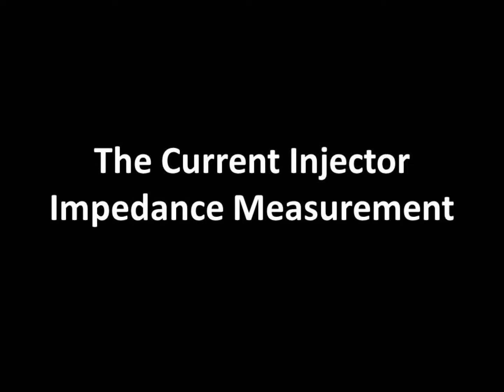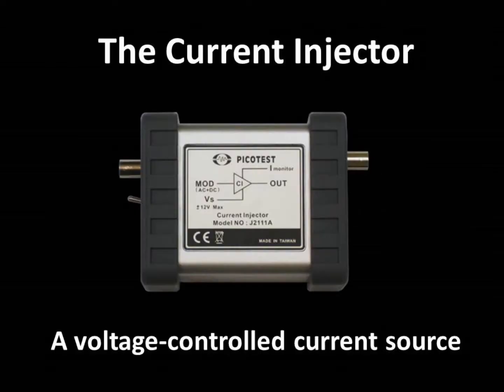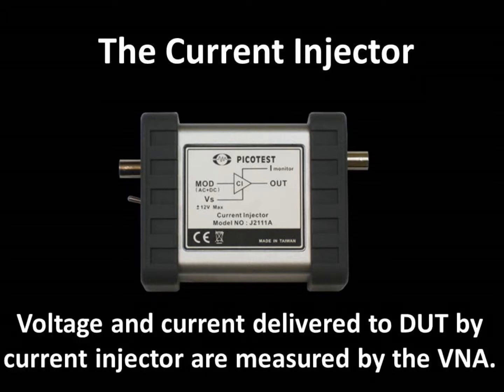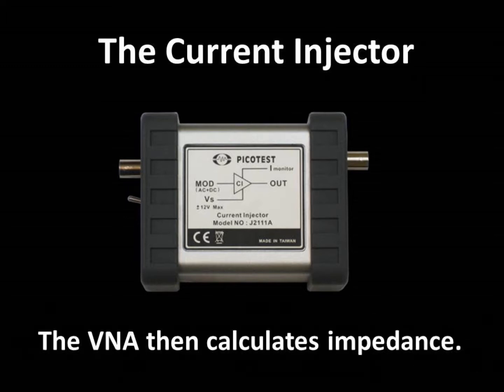The current injector is a voltage-controlled current source which is modulated by the VNA. The resulting voltage at the device under test, or DUT, and the modulated current are both measured by the analyzer, which then calculates voltage divided by current to obtain impedance.